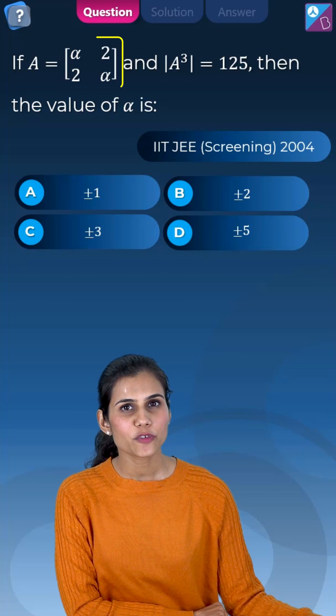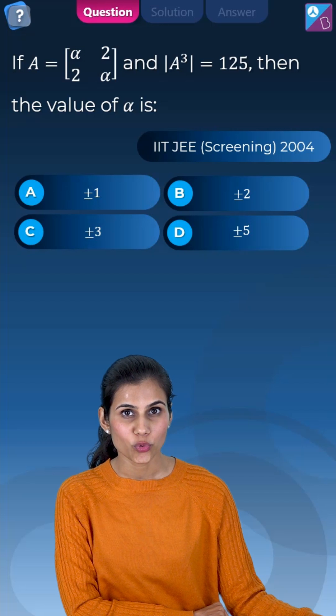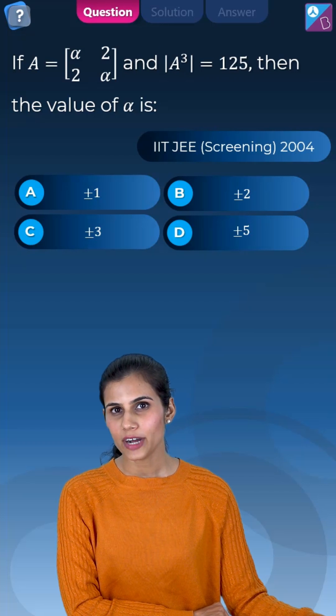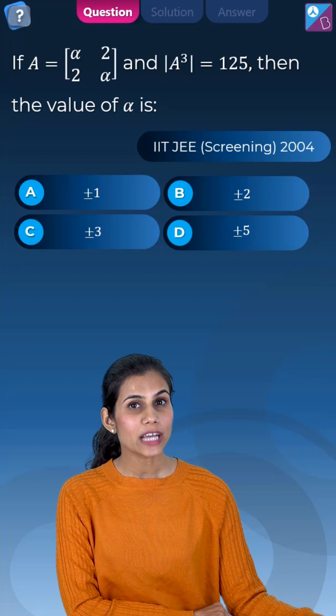Here we have a square matrix of order 2 where alpha is unknown such that determinant of A cube is equal to 125. We are being asked to compute alpha.